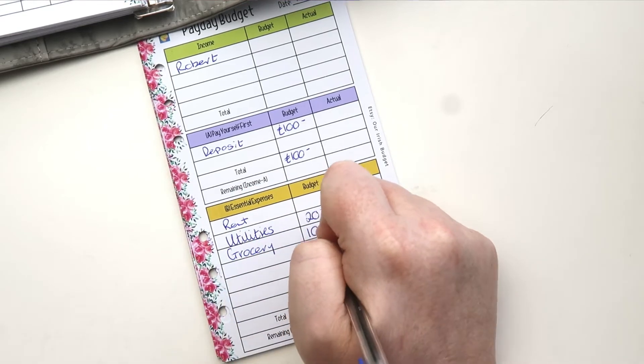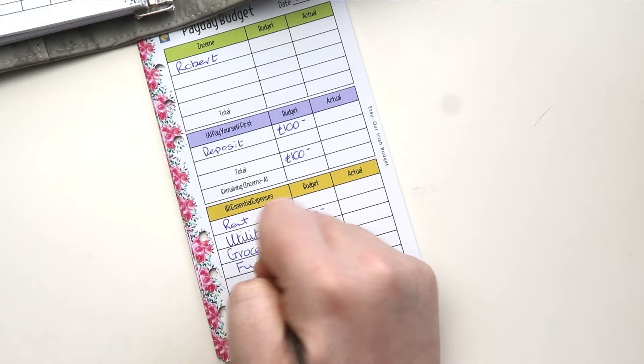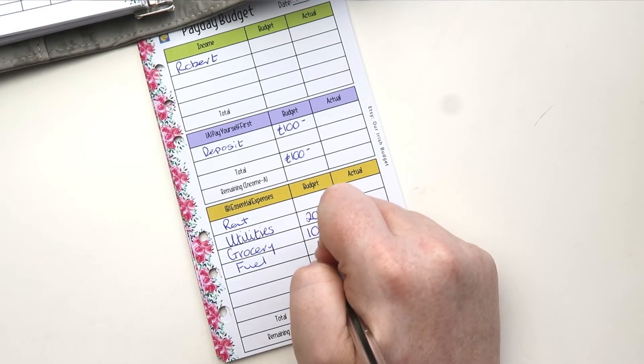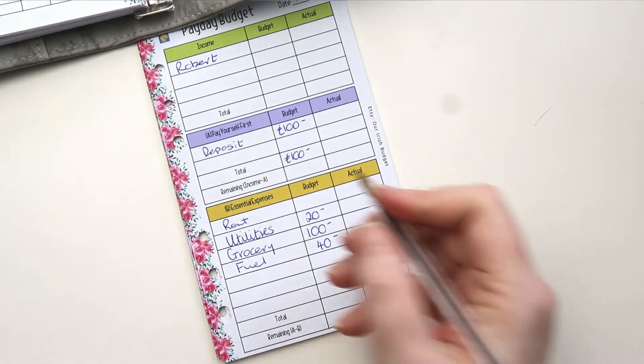We always give a hundred euros to groceries. Next off we have our fuel. So fuel to get us to and from work and school and that sort of stuff, we're putting 40 euros.